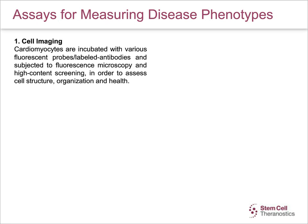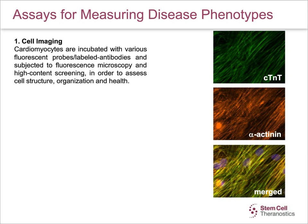This slide and the next four slides describe the various assays that we use to measure the disease phenotype in cardiomyocytes. The first one is cell imaging. In this assay, cardiomyocytes are incubated with various fluorescent probes or labeled antibodies and subjected to fluorescence microscopy and high-content screening in order to assess cell structure, organization, and cell health. The right panel shows that cardiomyocytes are stained positive for CTNT and alpha-actinin, and the lowest panel is a merged image.